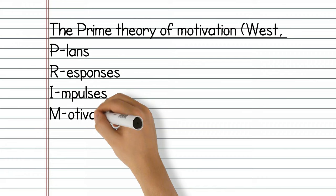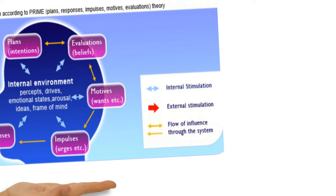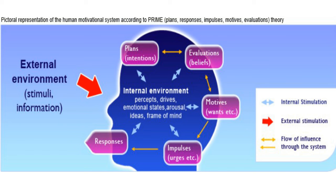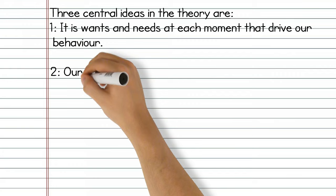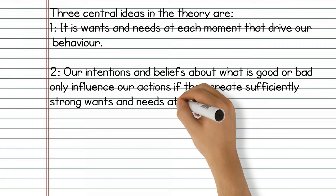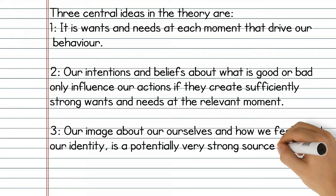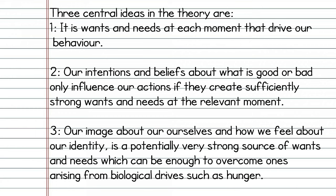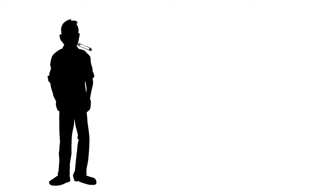The PRIME theory is predicated on the system of human motivation and its five components are plans, responses, impulses, motivation and evaluation. The PRIME theory is based on the assumption that in order to understand human motivation we need to understand the different levels at which that motivation operates — from its most basic responses to its most complex levels of planning. There are three central ideas to this theory. One: it's our wants and needs at each moment that drives our behaviour. Two: our intentions and beliefs about what is good or bad only influence our actions if they create sufficiently strong wants and needs at the relevant moment. Three: our image about ourselves and how we feel about our identity is a potentially very strong source of wants and needs, which can be enough to overcome ones arising from biological drives such as hunger. The intention to do something won't always predict behaviour unless accompanied by evidence of wanting or needing to do something.